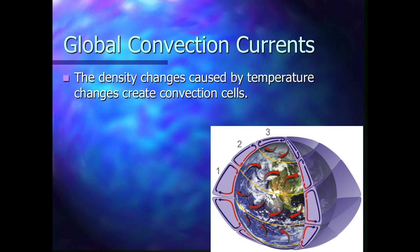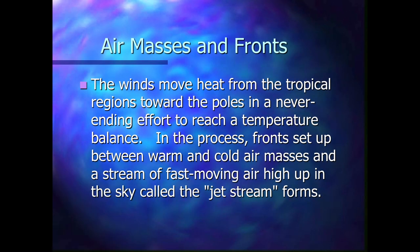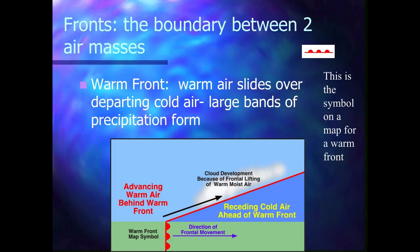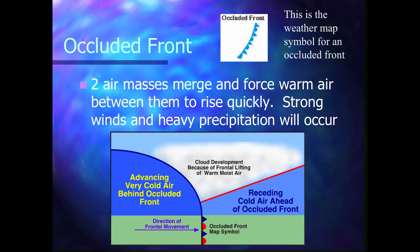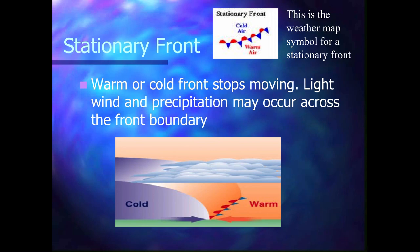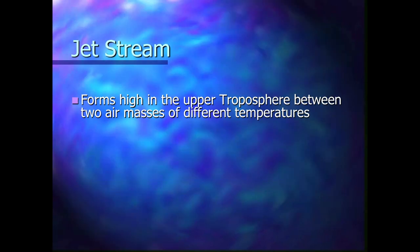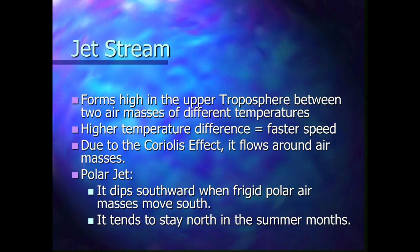Here's another great graphic of the global convection currents. Air masses and fronts review: warm front, cold front — the two big ones to know. Occluded front shows both symbols moving in the same direction; it produces strong winds and heavy precipitation but doesn't last long because both fronts move in the same direction. Stationary front brings precipitation that can last for days.